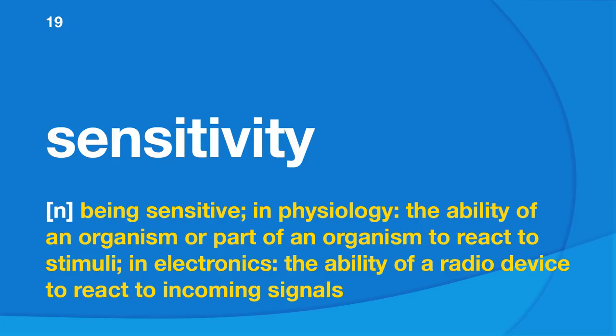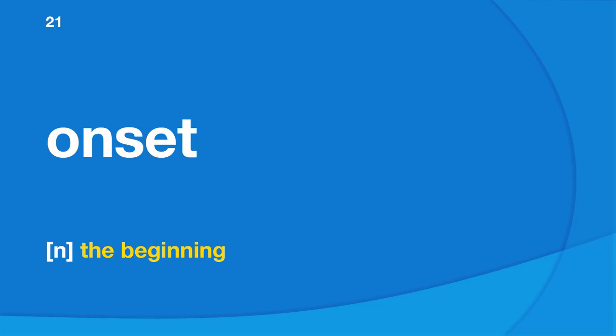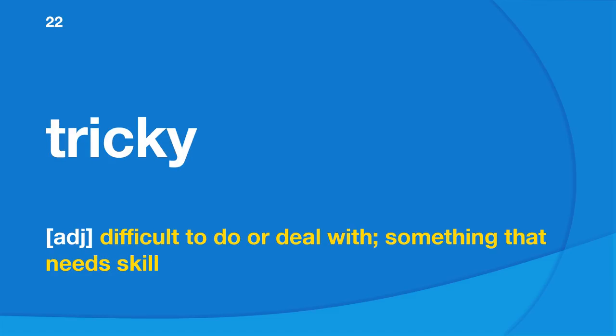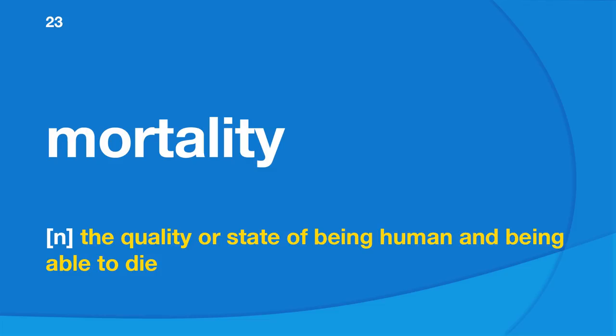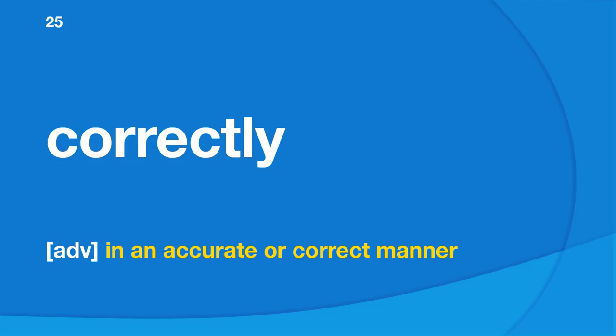Sensitivity: in physiology, the ability of an organism or part of an organism to react to stimuli; in electronics, the ability of a radio device to react to incoming signals. Sensory: referring to the five senses. Onset: the beginning. Tricky: difficult to do or deal with, something that needs skill. Mortality: the quality or state of being human and being able to die. Workshop: a brief intensive course for a small group emphasizing problem solving. Correctly: in an accurate or correct manner.